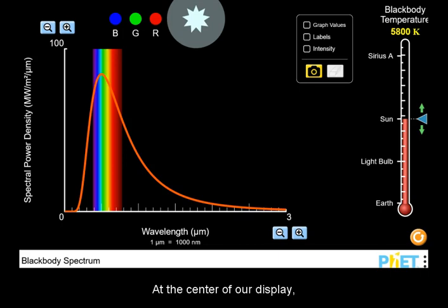At the center of our display, you will see the power emitted as a function of wavelength. Longer wavelengths are to the right, and shorter wavelengths are to the left.